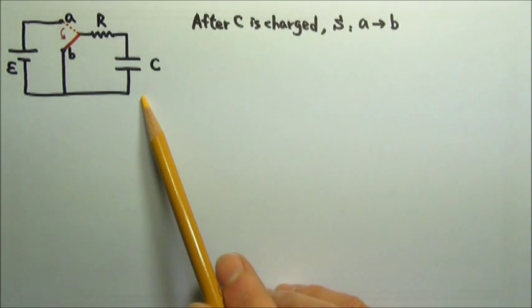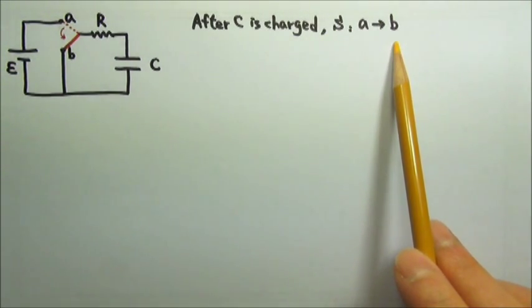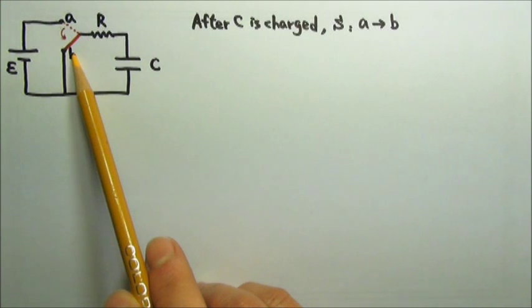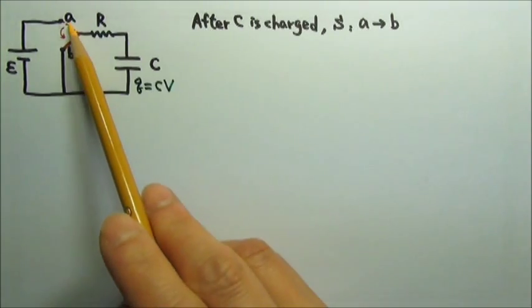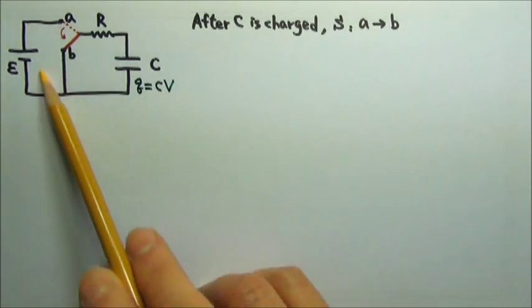After the capacitor in this basic RC circuit is charged, the switch goes from A to B. What happens when the switch goes from A to B? When the switch goes to B, the capacitor begins to discharge through this loop.